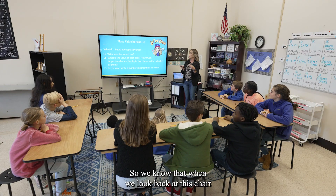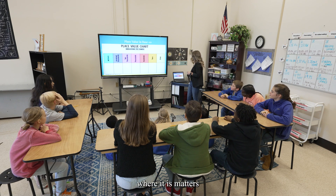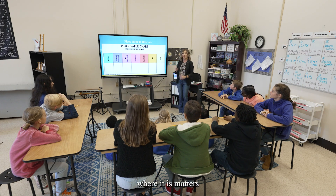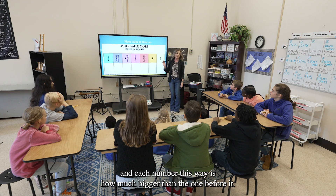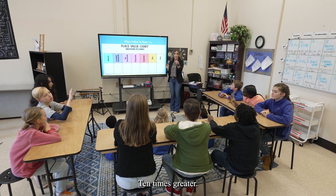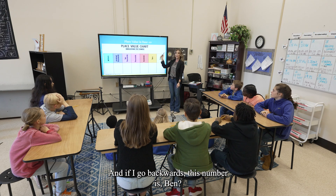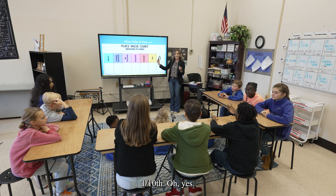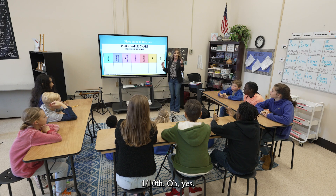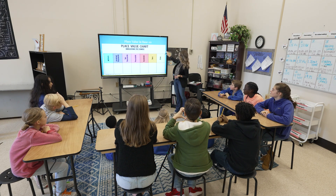So we know that when we look back at this chart, where a digit is matters. Each number going this way is how much bigger than the one before it? Ten — ten times greater. And if I go backwards, this number is one tenth of the number in front of it.